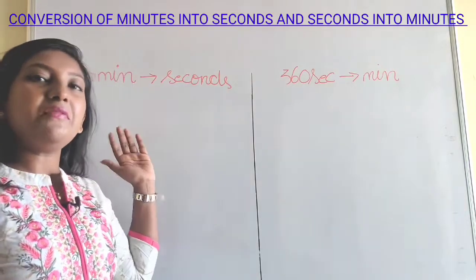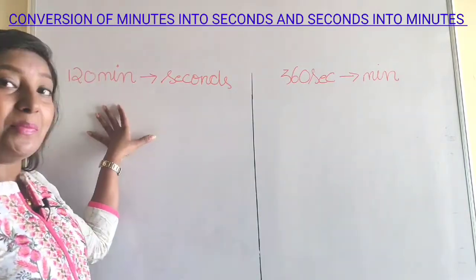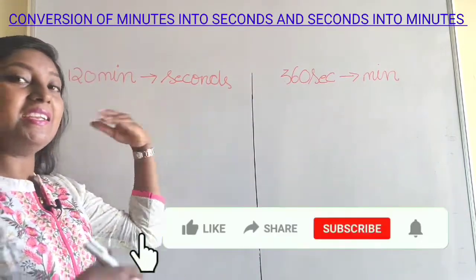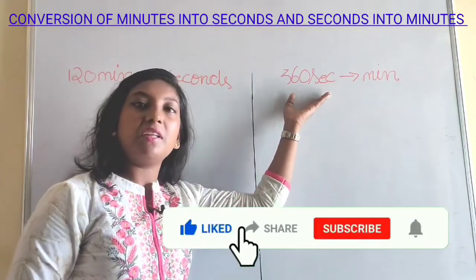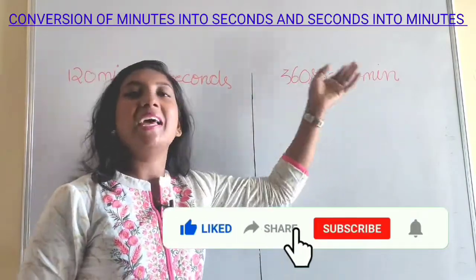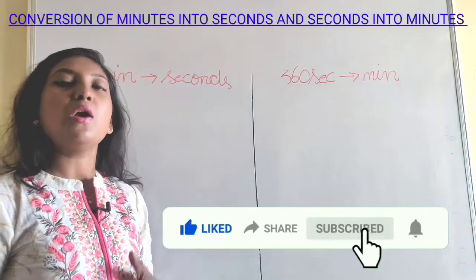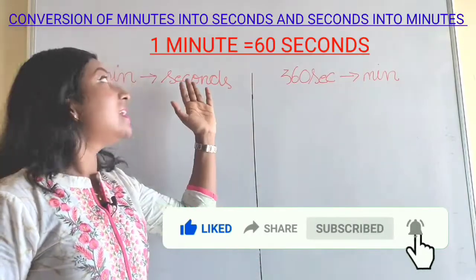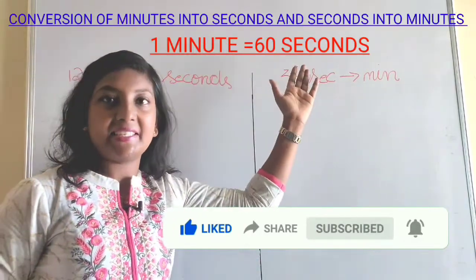Here we are converting 120 minutes to seconds, and vice versa — converting 360 seconds to minutes. Let's see how to convert. We all know that 1 minute equals 60 seconds.